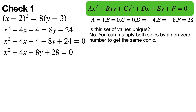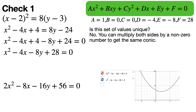Is this set of coefficient values unique? No, because you can multiply both sides of the equation by any non-zero number to get the same conic section. For example, if you multiply the entire equation by 2 on both sides, you would get the same parabola as before.